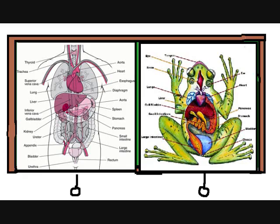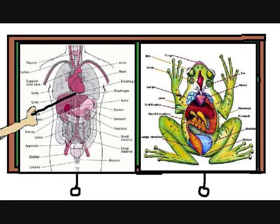Let's examine these two diagrams more closely. As you can see, both frogs and humans have similar muscular systems.